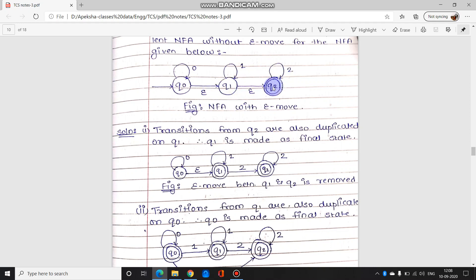So there will be a transition from Q1 to Q2 as well. We will make this also as final state. Yeh do apna rule hai which we have studied above right now. That rule says you have to duplicate all the moves over here in the previous state, plus if the current state over here is final state, then yeh wala bhi you will make it as final state.